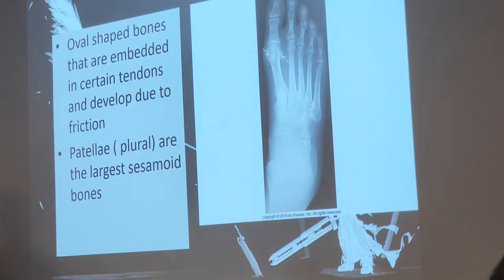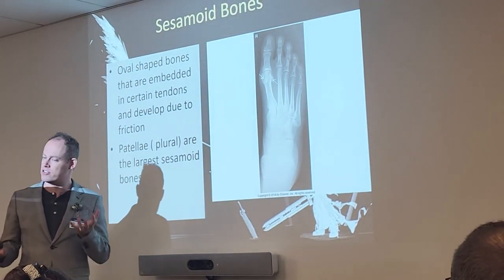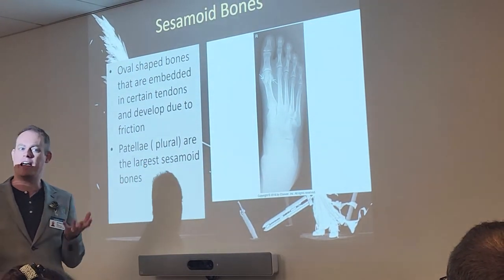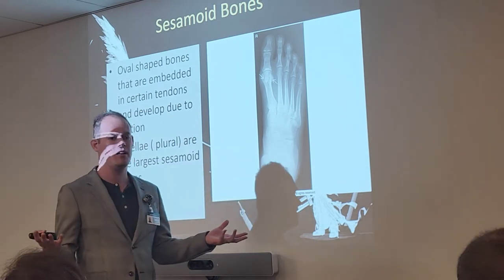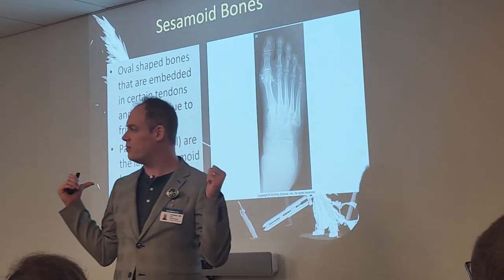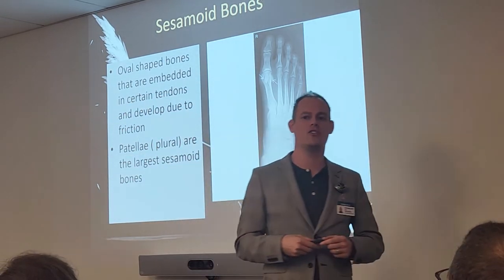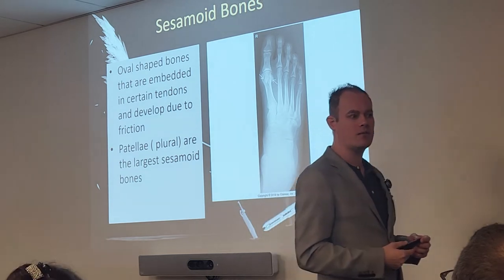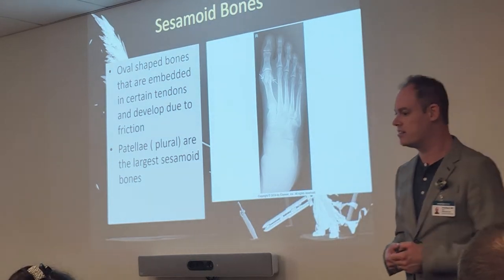Speaking of sesamoid bones: sesamoid bones are oval-shaped and embedded within tendons that actually develop due to friction. Areas of your body that have the most friction develop sesamoid bones. We have the largest ones in the body — the patellae, plural; patella is singular. They are considered the largest sesamoid bones because there is great friction in our knees as we move our legs constantly.